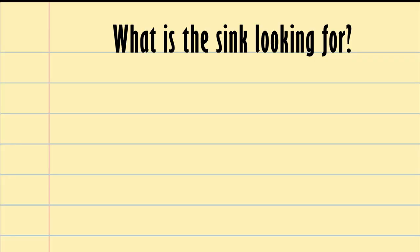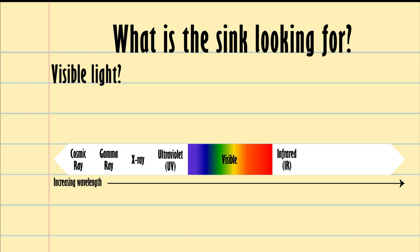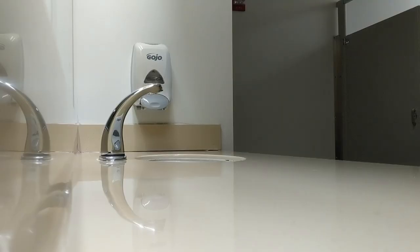So what is the sink looking for? The light that our eyes see is what we know as visible light. This is just one type of light. Some of the shorter and more damaging types of light are known as cosmic rays, gamma rays, x-rays, and ultraviolet light. Then the longer types of light are infrared, microwave, radar, and radio.